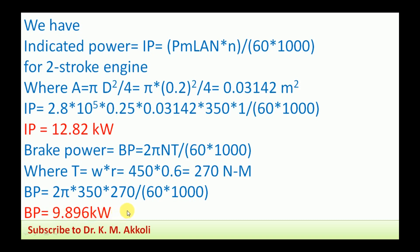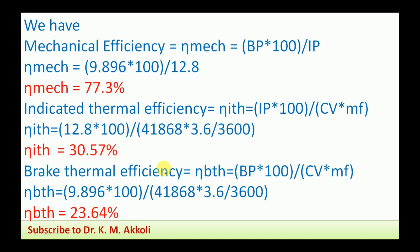Next, mechanical efficiency η_mec = (BP / IP) × 100. Both BP and IP are in kilowatts so units cancel. η_mec = (9.896 / 12.82) × 100 = 77.3%.